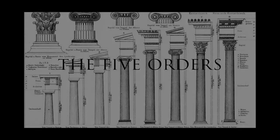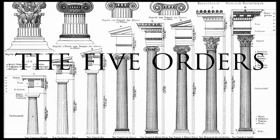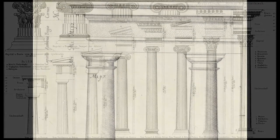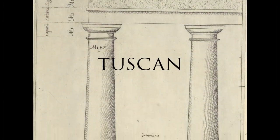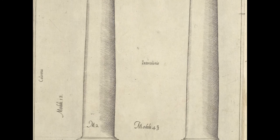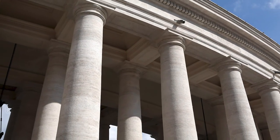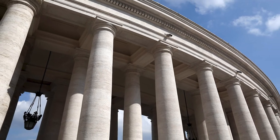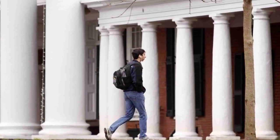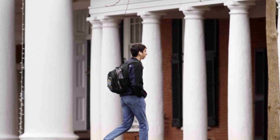The Five Orders are thus classed: the Tuscan, Doric, Ionic, Corinthian and Composite. The Tuscan is the most simple and solid of the Five Orders. It was invented in Tuscany, whence it derives its name. Its column is seven diameters high, and its capital, base and entablature have but few mouldings. The simplicity of the construction of this column renders it eligible where ornament would be superfluous.